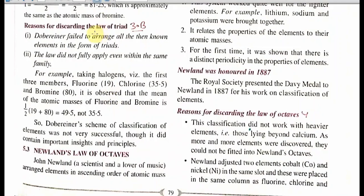We can see the reasons for discarding the Law of Triads. Dobereiner failed to arrange all known elements into triads, and the law did not fully apply within the same family. For example, in the halogen family (group 17): fluorine, chlorine, and bromine — checking the average: (80 + 19) / 2 = 49.5, which is very far from 35.5 (chlorine's atomic mass). So 49.5 was much farther from 35.5, meaning Dobereiner's rule was applicable to only one or two groups. It failed.